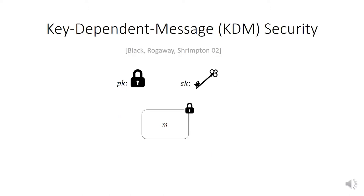Let me give you some context on KDM security — key-dependent message. Consider a public key encryption scheme and an encryption of a message M. The security of the public key encryption scheme guarantees that the plaintext M is hidden as long as the secret key is not revealed.